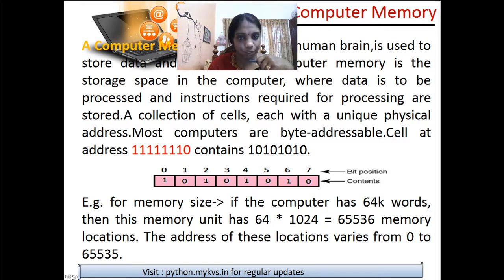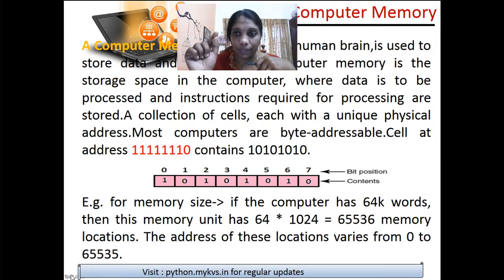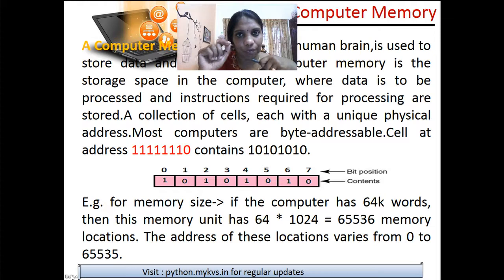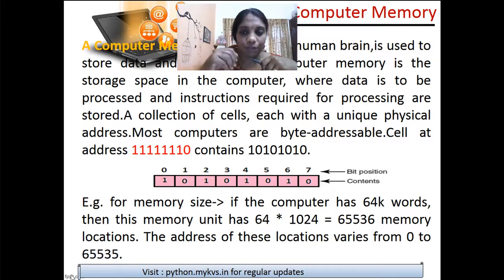Memory is like our brain with a lot of neurons. In the same way, you have a collection of cells, each with a unique physical address — like each finger in our hand is identified differently. Each cell is identified as a byte. Most computers understand only machine language, which uses binary numbers: zeros and ones. Combinations of zeros and ones form the address of each cell in the memory.